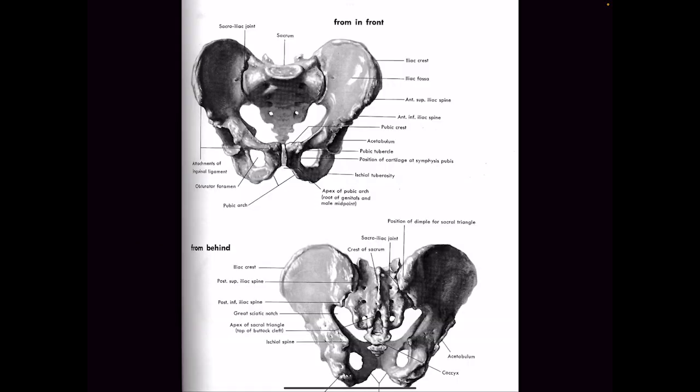So the pelvis — there was one big thing we talked about: the difference between the male and female pelvis. What was the big difference? Width. The width of the female pelvis is wider because of the need to bear children. The male pelvis is narrower but longer.